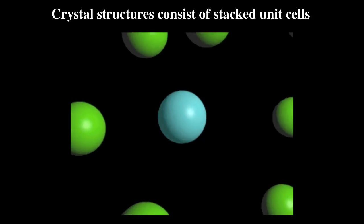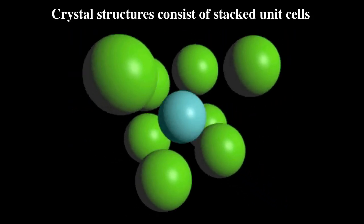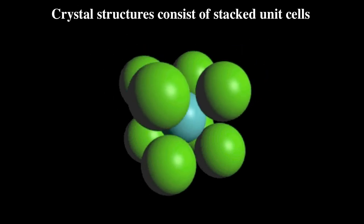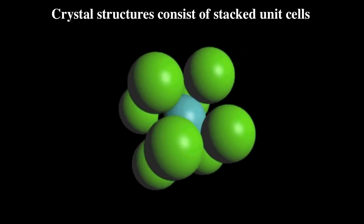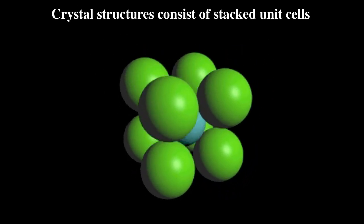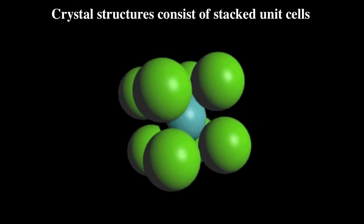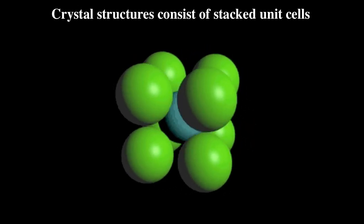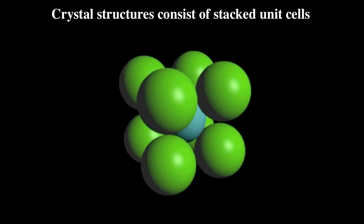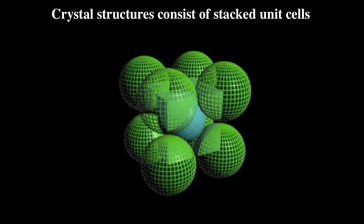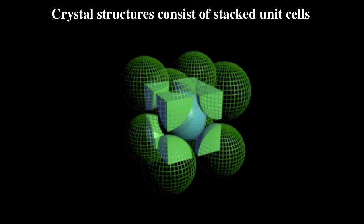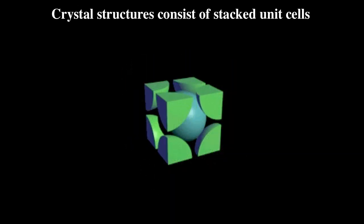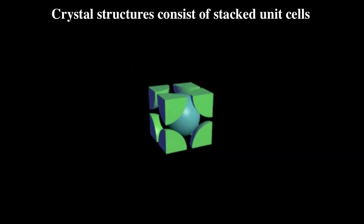In solid cesium chloride, each cesium ion — here colored blue — is surrounded by eight chloride ions, and vice versa. The crystal structure is constructed from its unit cell by stacking the cells together without any gaps in between.